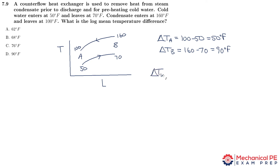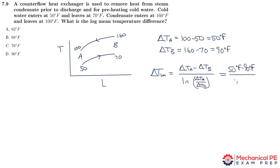Delta T_lm equals (delta T_a minus delta T_b) divided by the natural log of (delta T_a / delta T_b), which is (50 minus 90) divided by the natural log of (50/90). You might notice the numerator is a negative number, but when you take the natural log of a fraction less than one, that also turns out to be negative. So the negatives cancel, and you get a log mean temperature difference of 68 degrees.